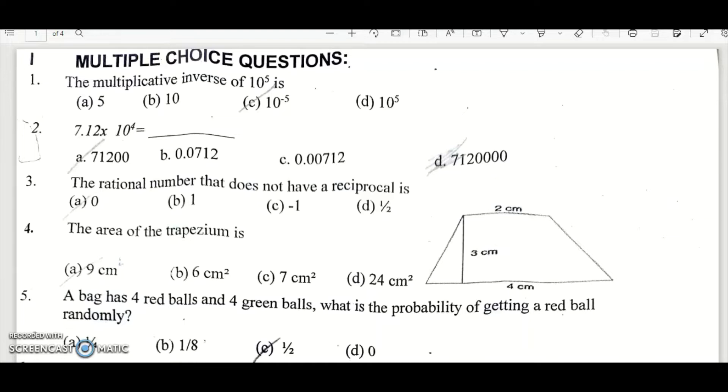So this is section A, multiple choice questions. Let's go through the whole paper. Multiple choice questions I will give answers here itself and I will show the rest of the paper as well. So multiplicative inverse of 10 power 8 is option C, 10 power minus 5.